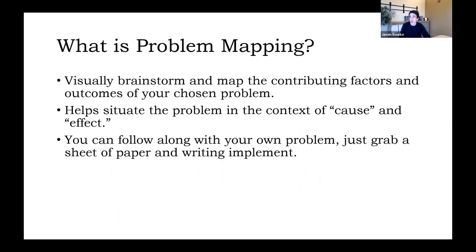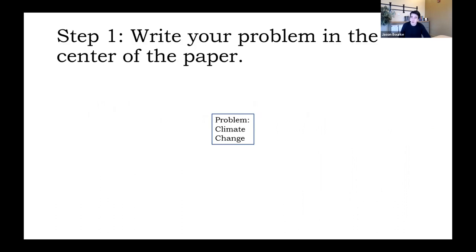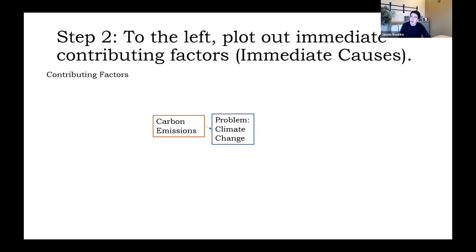So with that piece of paper, we're going to make a problem map — a way to visually brainstorm the problem and its contributing factors and its impacts. While we're being careful about the word 'cause,' we are going to use it casually here as we situate our problem in the context of its causes and effects. To start, write your general problem in the center of the paper. On the left side, give the heading 'contributing factors.' Then start by identifying the immediate contributing factors — in this case, we know carbon emissions are the leading direct cause of climate change.